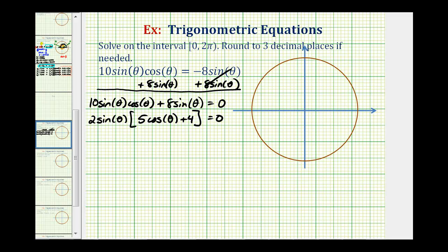And this product is equal to zero when two sine theta equals zero, or when five cosine theta plus four equals zero. Well, dividing both sides by two we would just have sine theta equals zero. Over here we would subtract four and divide by five. So we have cosine theta equals negative four fifths.